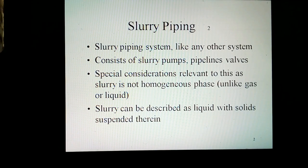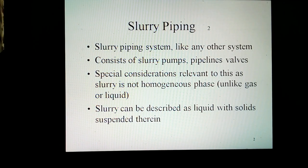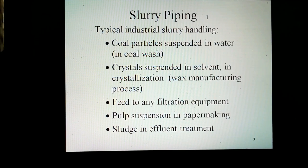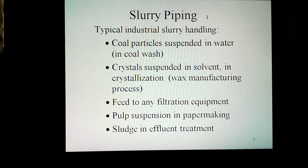A slurry piping system, like any other system, consists of slurry pumps, pipelines, and valves. Special considerations relevant to this system are introduced by the fact that slurry is not a homogeneous phase unlike gas or liquid. Slurry can be described as liquid with solids suspended therein. Typical industrial instances of slurry handling are coal practices suspended in water in coal slurries, crystals suspended in solvent in crystallization, wax manufacturing processes, feed to filtration equipment, pulp suspension encountered in paper making, and sludge encountered in effluent treatment.